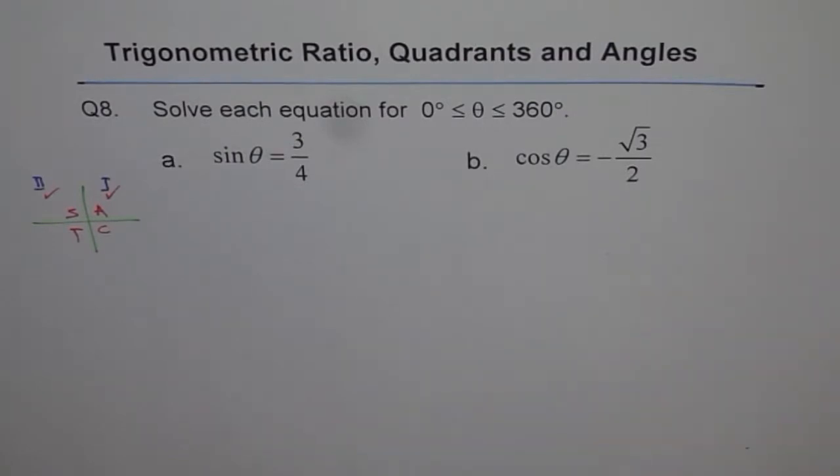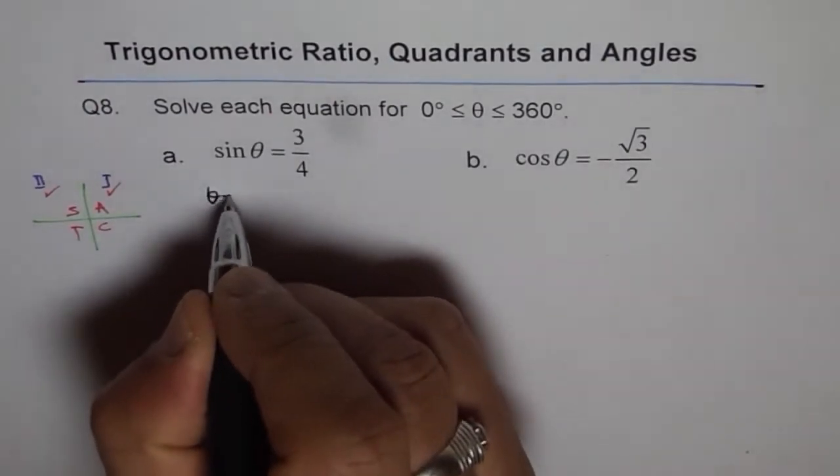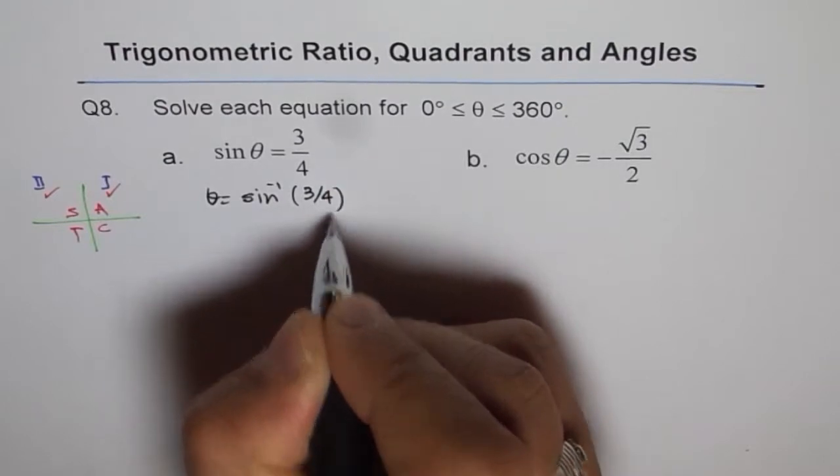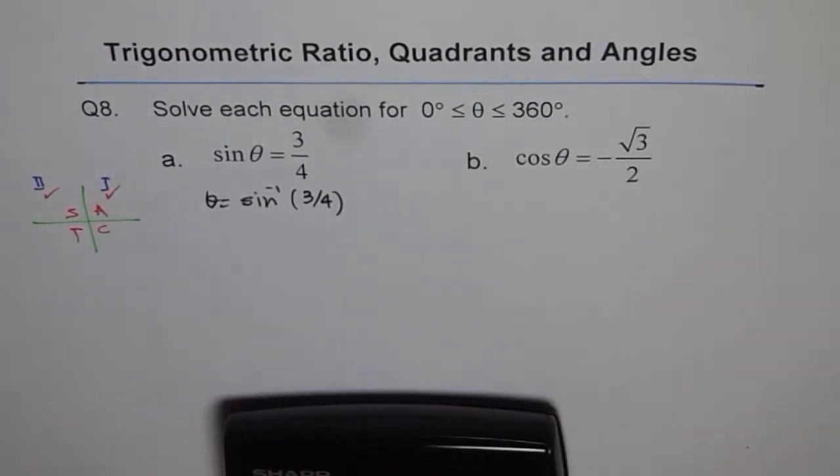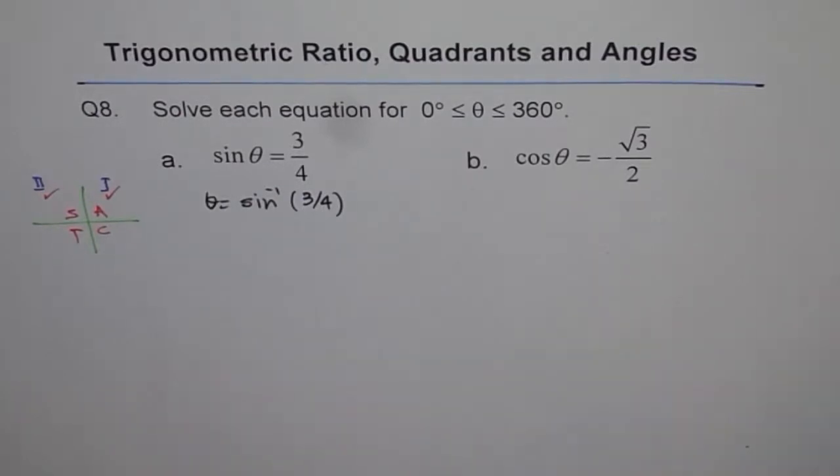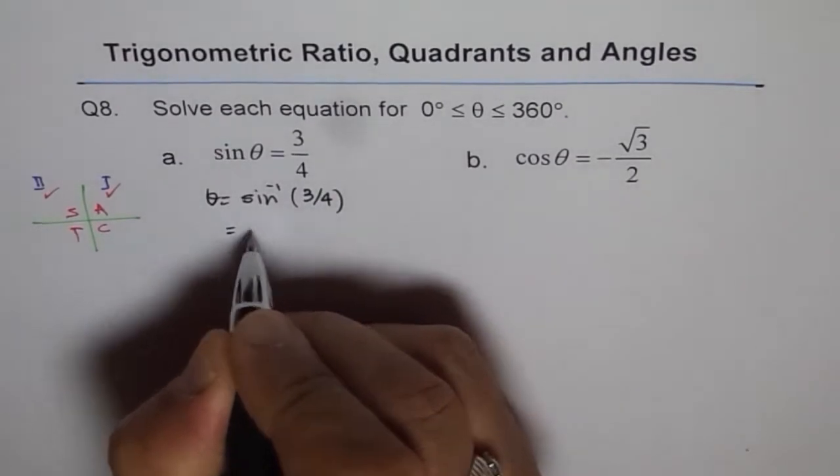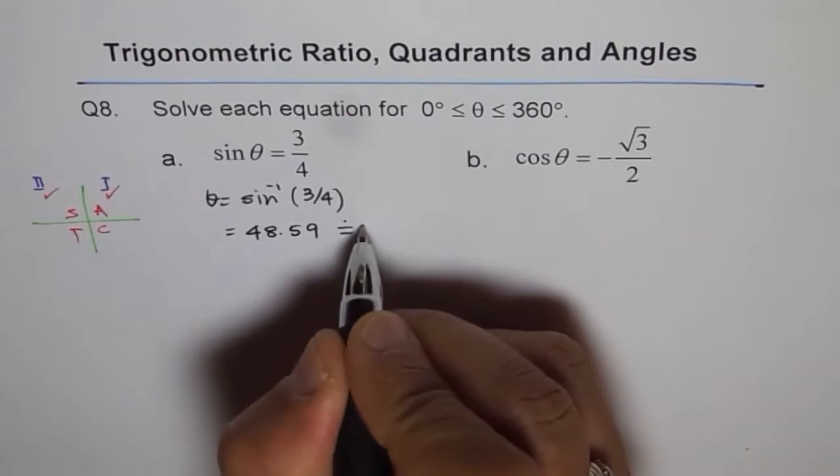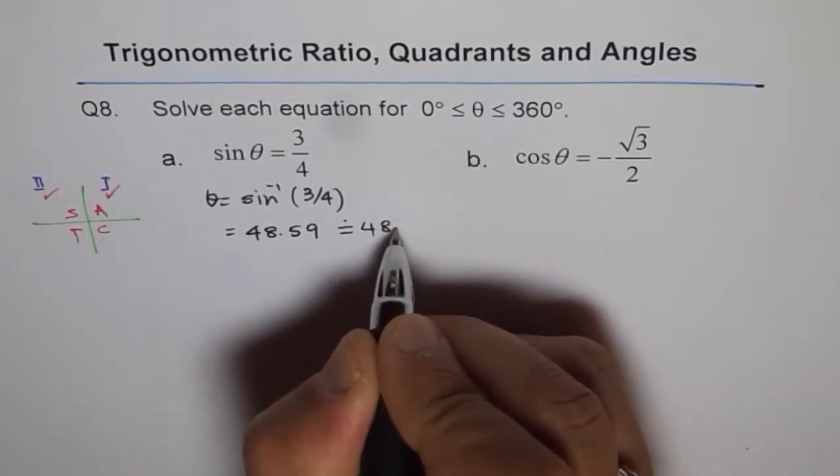Now sin θ is 3/4. That means θ = sin⁻¹(3/4). Let us use the calculator and find the answer. So we said sin⁻¹(3/4) is equal to 48.59°. So we get one answer as 48.59°. So let us write down this as 48.6 degrees.